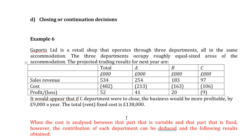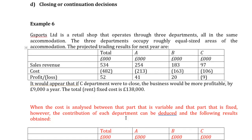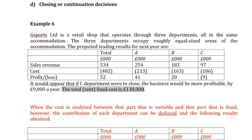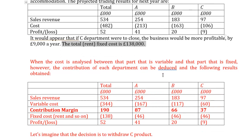Let's move to the last decision: closing or continuation. Remember the magic word — contribution margin. If it's positive, continue; if not, stop. We have three products: Product A achieves profit of £41, Product B achieves £20, and Product C achieves a loss of −£9. Total profit = £52. The manager asks whether to continue producing C. The total fixed cost (rent) is £138, divided equally among the three products at £46 each.